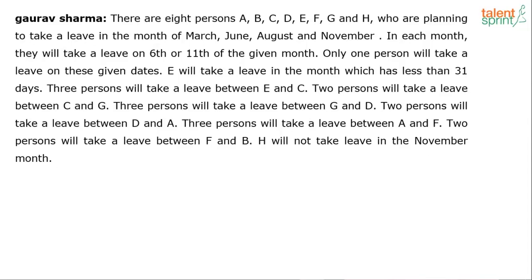If you observe, there is no clue given about which person has taken a leave in which month and on which date. All they have talked about here is the gap between different pairs of persons: 3 persons between E and C, 2 persons between C and G, 3 persons between G and D, and so on.